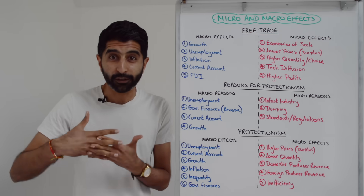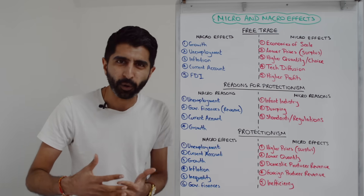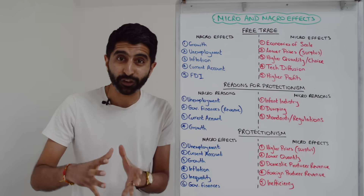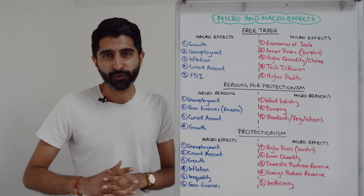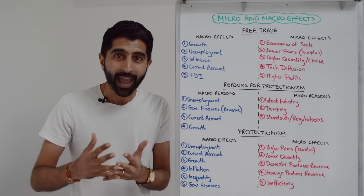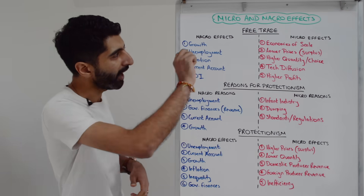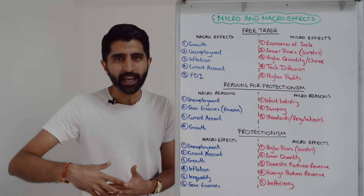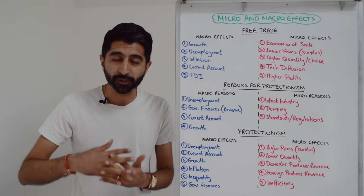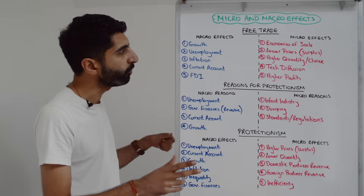An obvious macro effect is to talk about economic growth — how countries who exploit their comparative advantage, specialize, have a surplus, can then export that to the rest of the world, increasing X, X minus M, and AD, which takes you to higher growth. It also takes you to job creation. The other side is looking at industries who aren't internationally competitive, where maybe jobs are lost as those industries decline. So unemployment can go both ways.